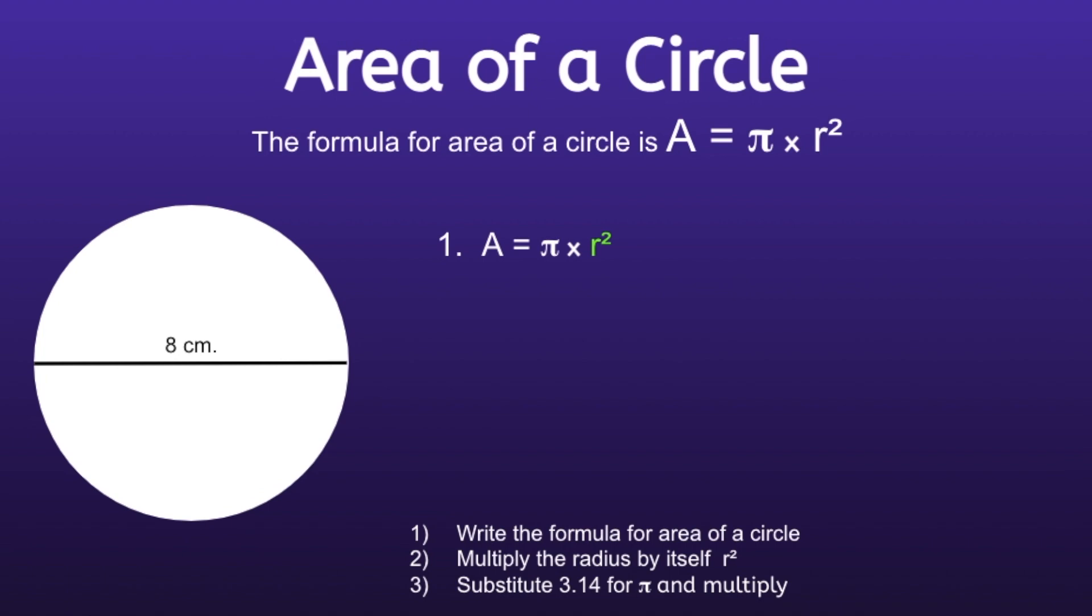If we look at the circle, we should notice that they gave us the diameter, not the radius. So we know the diameter is equal to 8. And remember the radius is half of the diameter. So if the diameter is 8, that means the radius is 4. When we multiply that by itself, 4 times 4 is equal to 16.